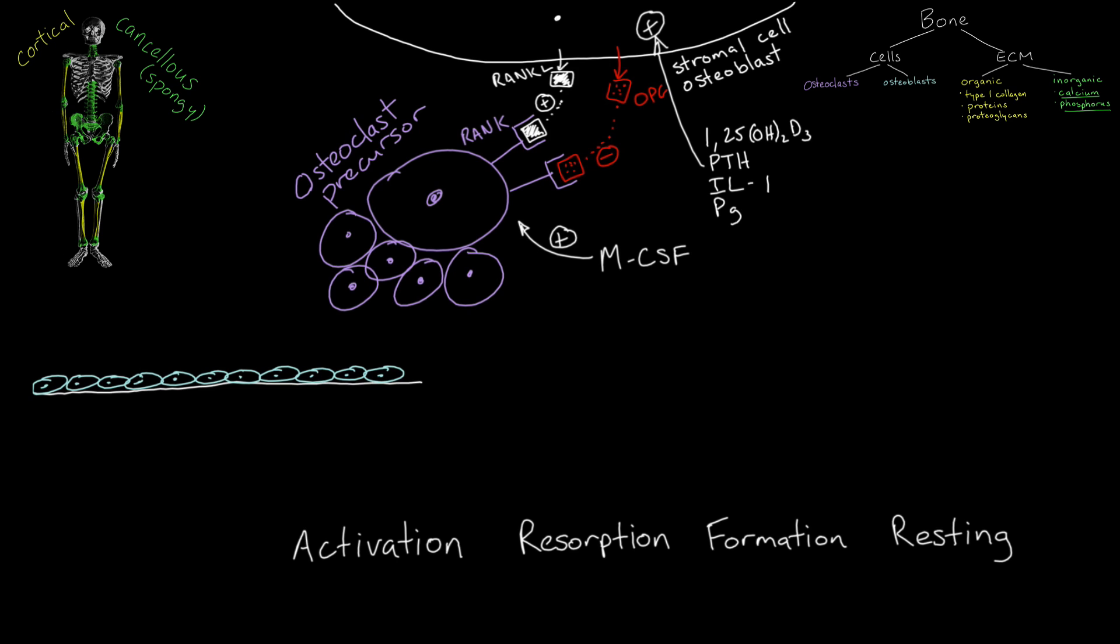The activated osteoclasts fuse to form mature bone resorbing cells and are accrued to the activated surface. The osteoclasts attach tightly to the matrix, creating an isolated lacunae called Howship's lacunae, which creates an acidic environment that dissolves the inorganic matrix called bone resorption.